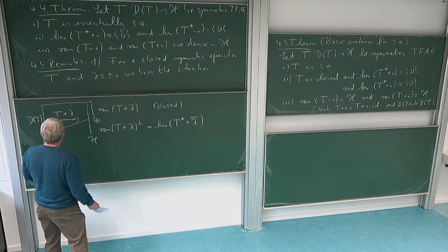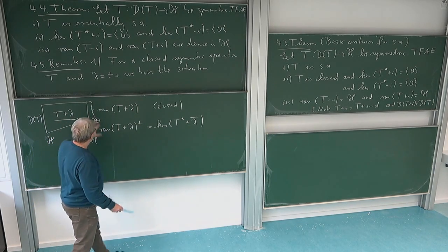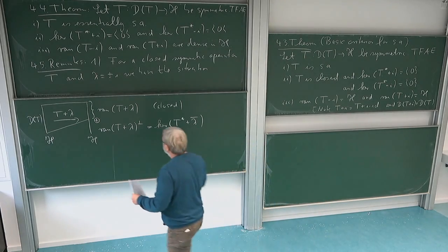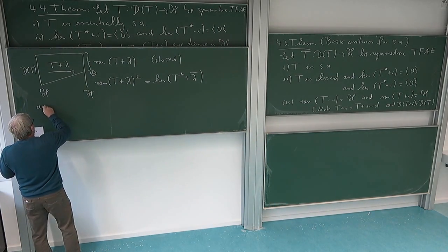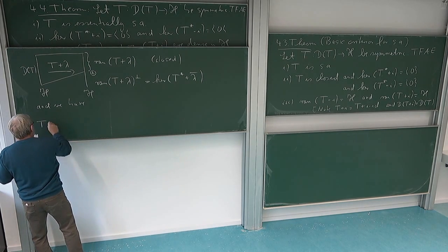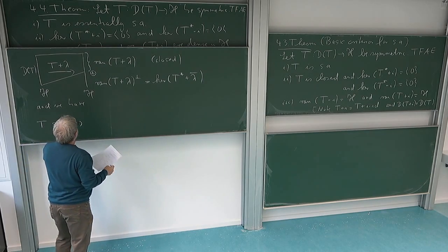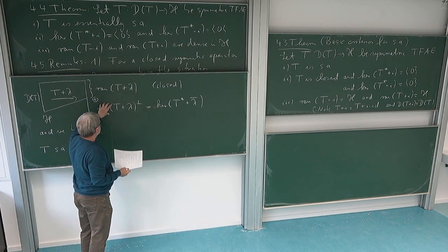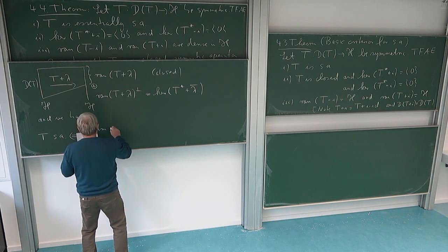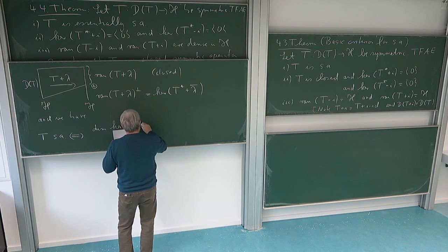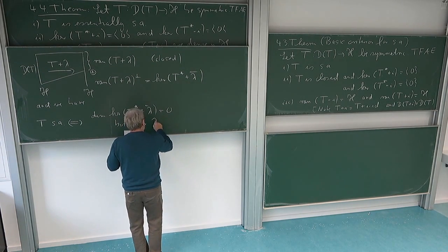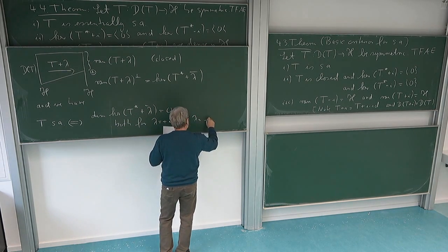Now you see why I want statements about those two things: the statement that the range is everything is the same as the statement that the kernel is trivial. So those are the two things. Really, if my operator should be self-adjoint, then the range must be everything and the kernel must be trivial. This condition for self-adjointness - this is the general situation for a closed symmetric operator - but if I want my operator to be self-adjoint, then I have to check that the range is everything or the kernel is trivial, and I have to check it for two lambdas, namely for plus and minus I.